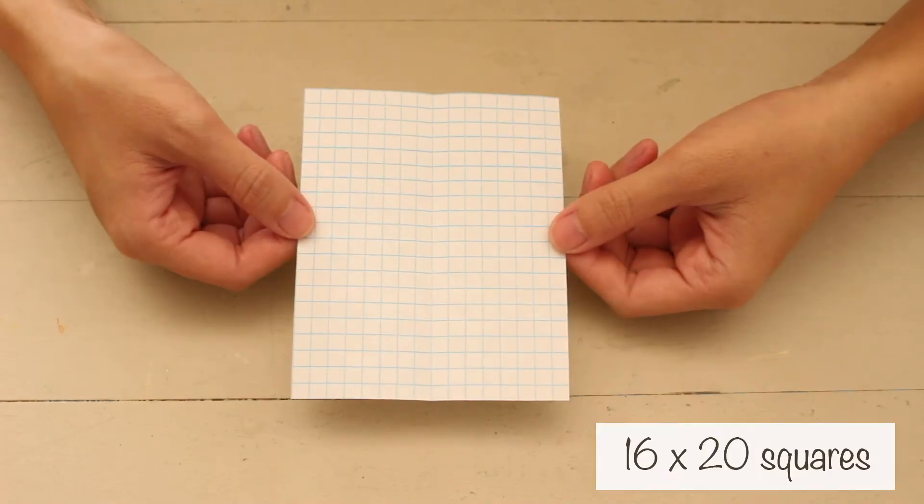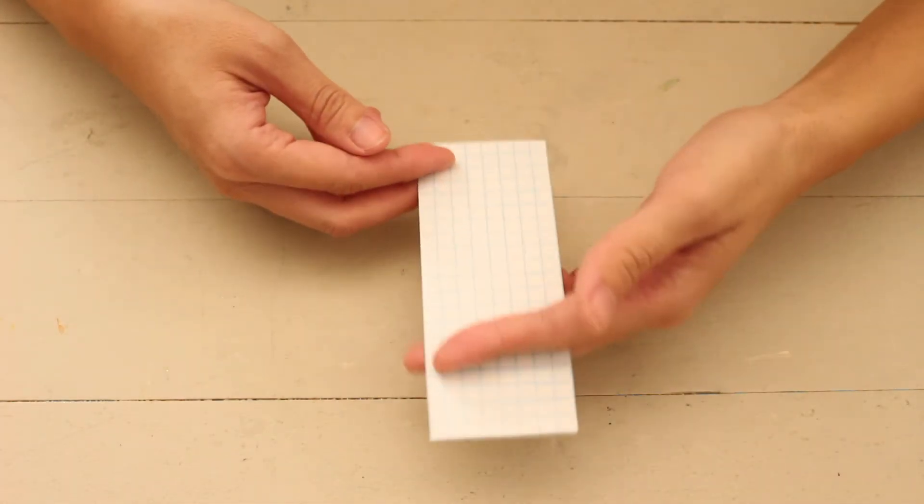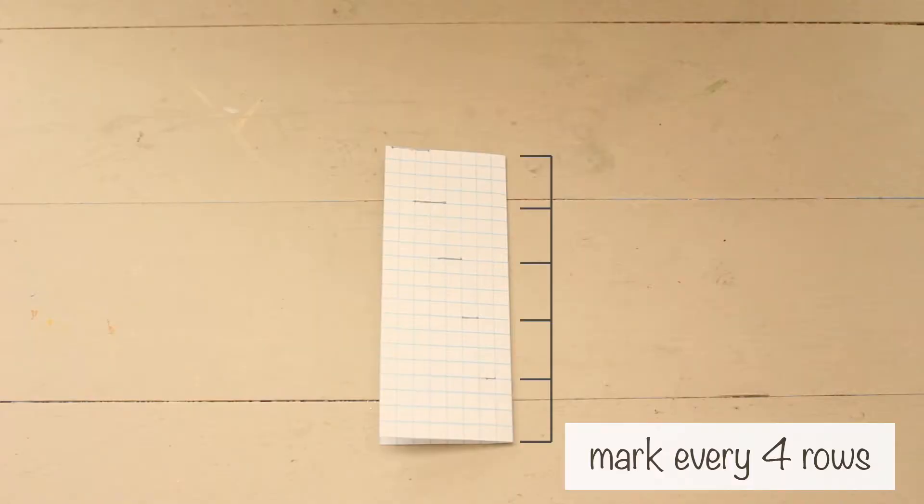First, I made my tree template. I cut graph paper and folded it in half. I marked every 4 rows.